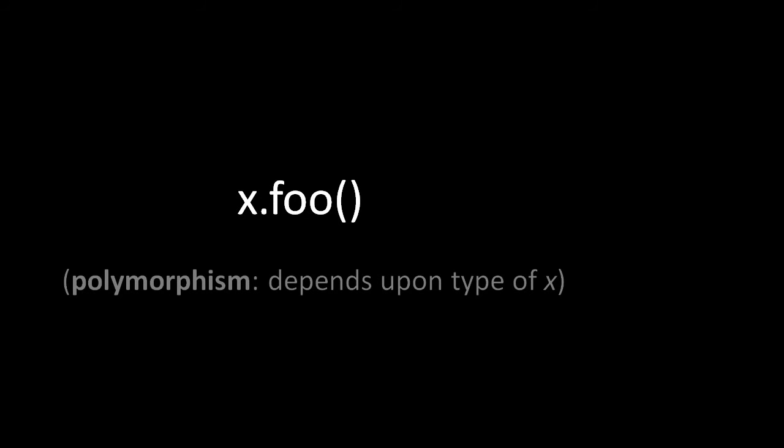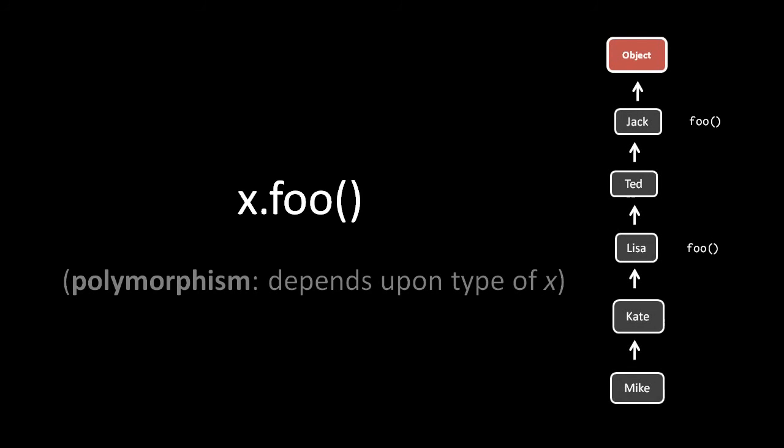Note that method calls are then naturally polymorphic. When we call x.foo, which method foo we're calling depends upon the type of x. Looking at the inheritance tree from our override example: if x is a Lisa, Kate, or Mike object, this will invoke the foo method defined in the Lisa class. If x returns an object of type Ted or Jack, this will invoke the foo method defined in the Jack class. The actual operation being invoked is changing based upon the type of the instance.